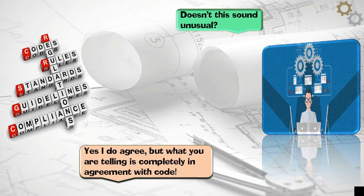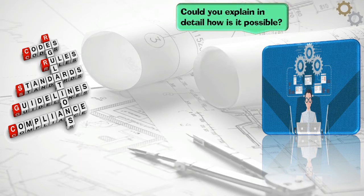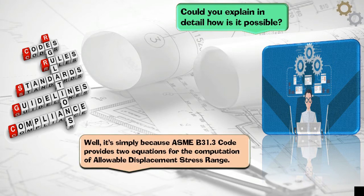Yes I do agree, but what you are telling is completely in agreement with code. Could you explain in detail how is it possible? Well, it's simply because ASME B31.3 code provides two equations for the computation of allowable displacement stress range.